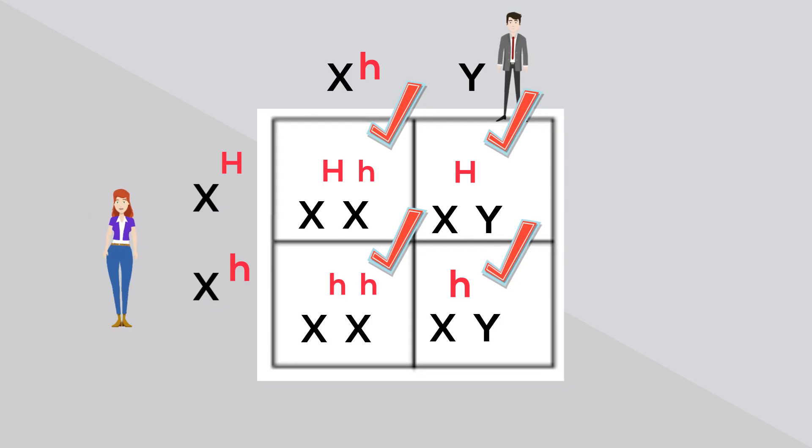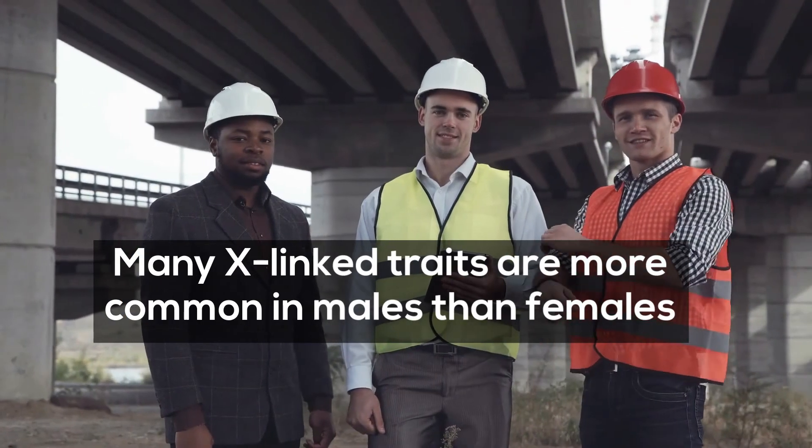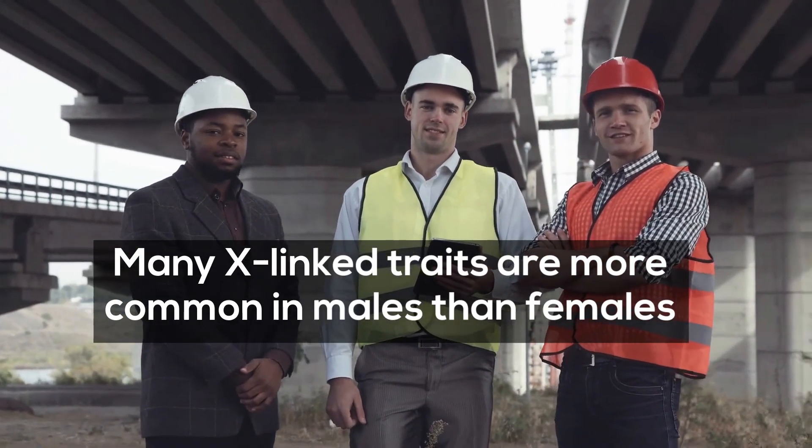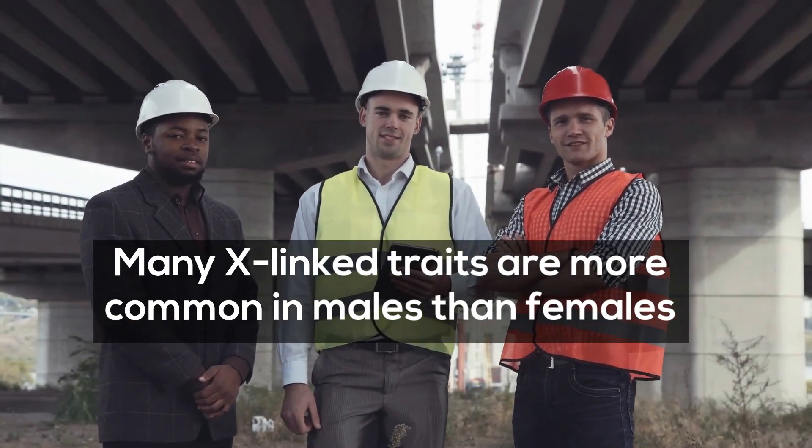Notice that the Punnett square works similar to a monohybrid cross except the Y is neither dominant or recessive. I will call the Y chromosome neutral. Because males have the disease or do not have the disease, they have a greater chance of inheriting an X-linked disease.